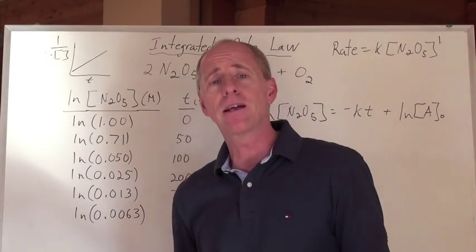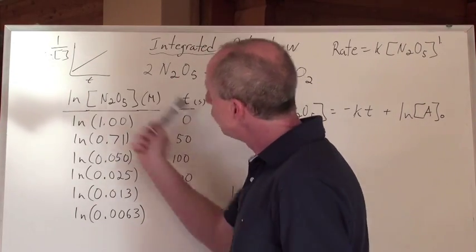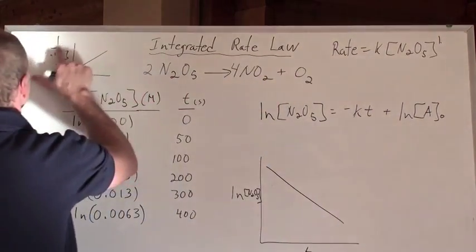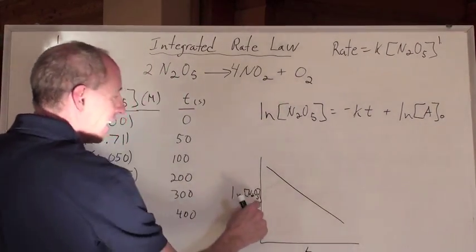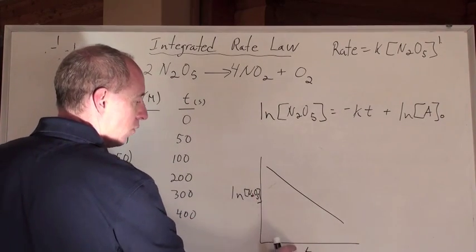It does that calculation for you automatically, you don't have to do it ahead of time, so that's cool. So now, when you graph that, you will get a straight line, well not this one, this one here, you're going to get a straight line relationship for the natural log of the concentration of N2O5 versus time.